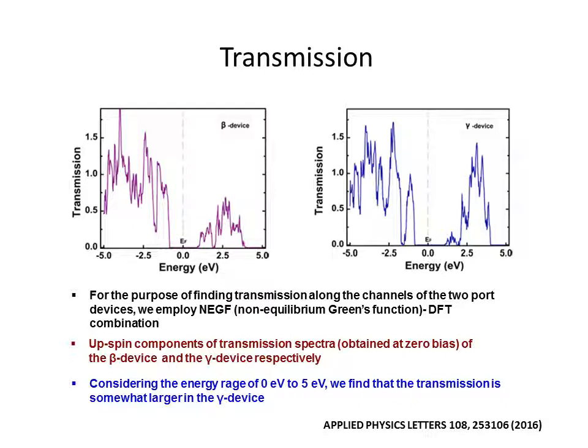For the purpose of finding transmission along the channel of the two-port devices, we employ the NEGF-DFT combination as I have mentioned earlier. The up-spin components of the transmission spectra, obtained at 0 bias for both the devices, beta and gamma. That means, the two-port devices with the channel having beta interface in one case and the gamma interfacing region in the other case. Considering the energy range of 0 to 5 eV, we find the transmission is somewhat larger in gamma device.